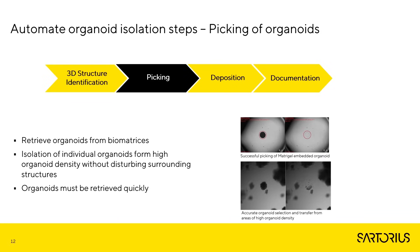In the top right panel, you can see a successful picking of organoids from biometrics using the cell selector flex platform. Images before and after picking are shown. It is also important when picking organoids from biometrics that the process does not disturb surrounding structures or critically damage the biometrics itself. In the bottom right panel, you can see an example of organoid retrieval without perturbing surrounding organoids.